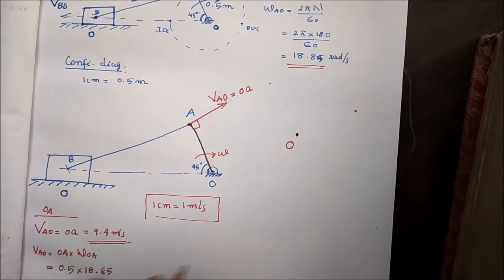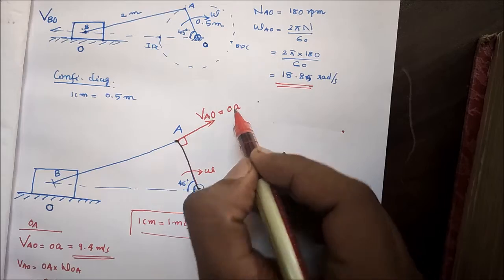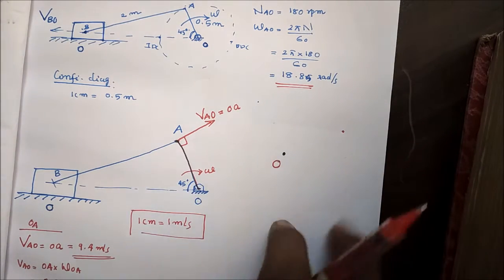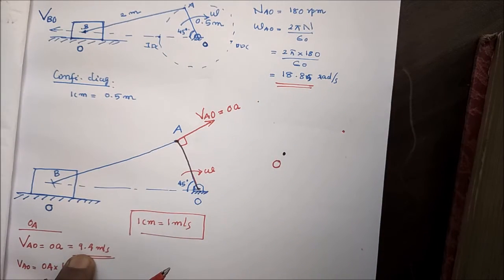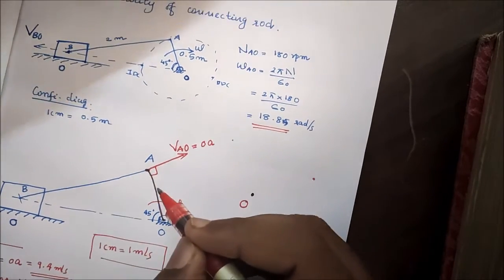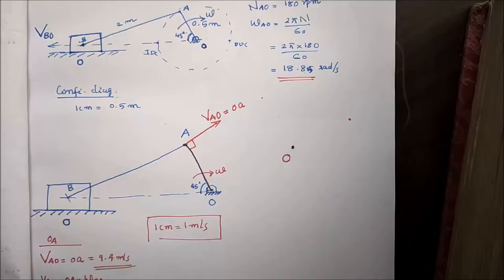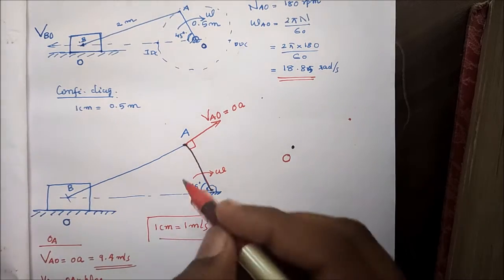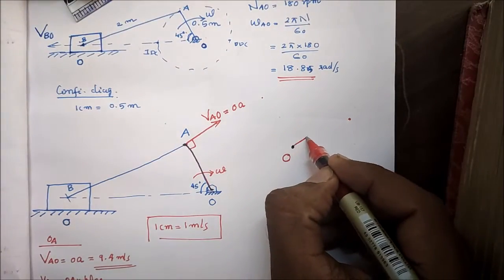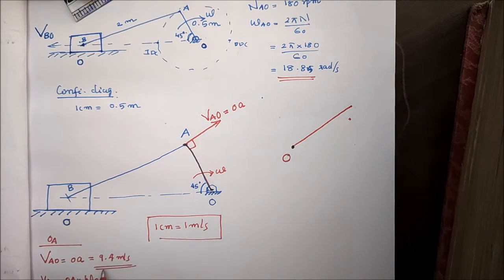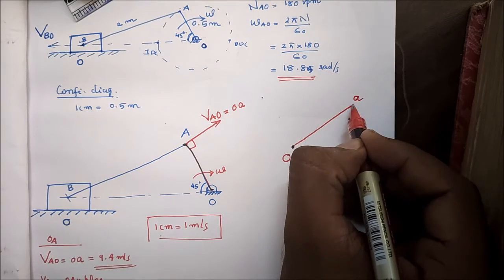What we are drawing is point O. This line is called O to A. We mark the points: O, and if the velocity OA is 9.4 m/s, we draw it as 9.4 cm. This parallel line is O to A, and the distance O to A is 9.4 cm, which equals 1 meter squared.